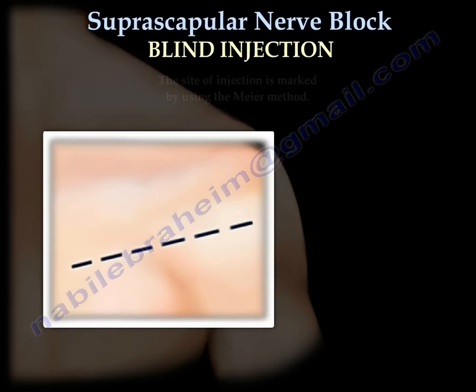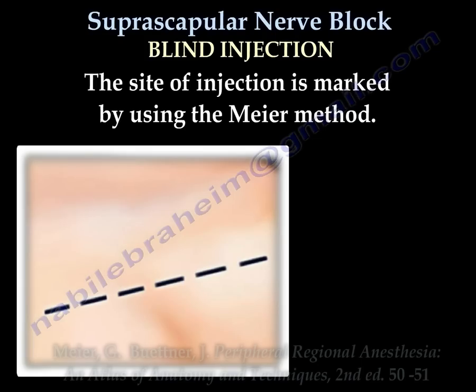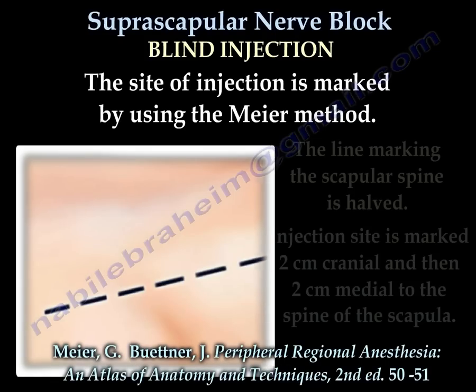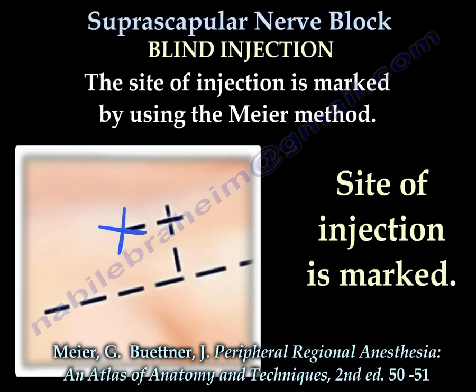Utilizing the Myers method, the line marked on the scapular spine is halved. The injection site is marked 2 cm cranial and 2 cm medial to the spine of the scapula. The site of injection is marked.